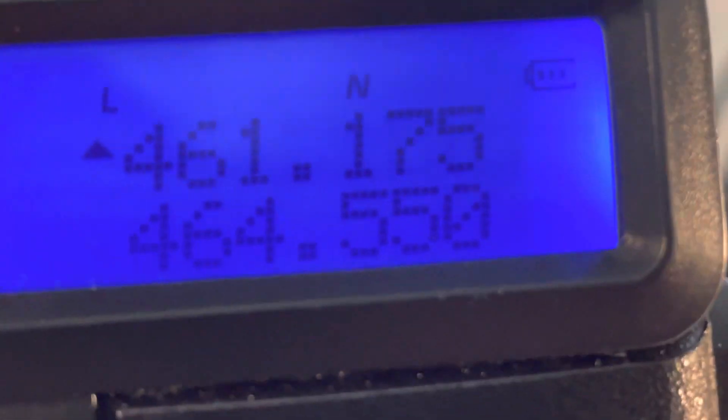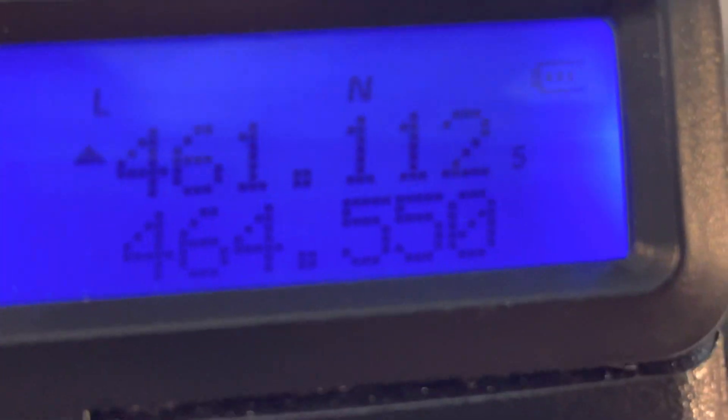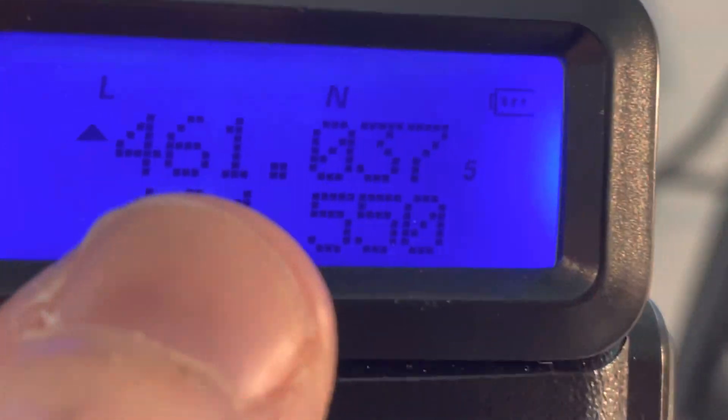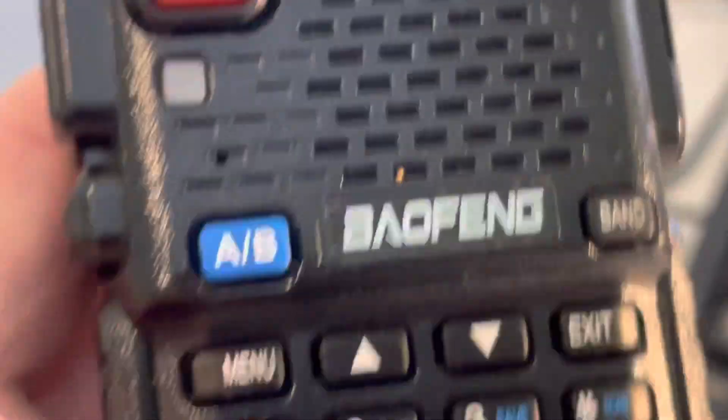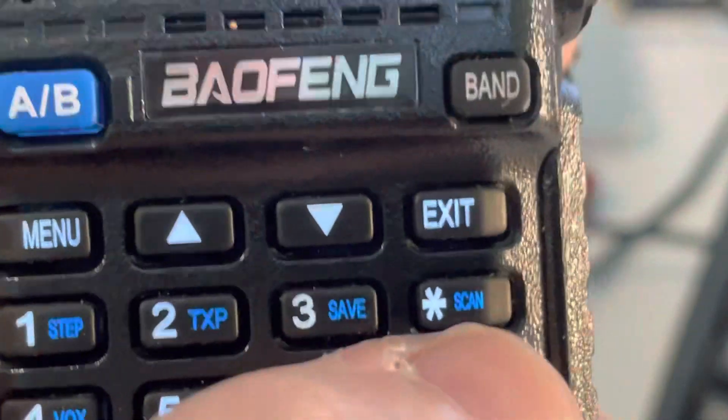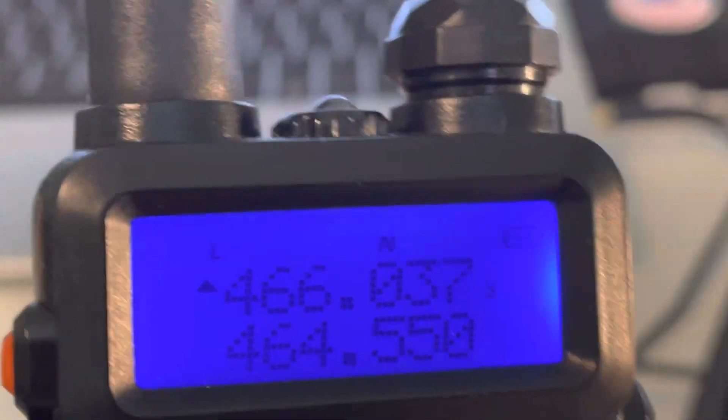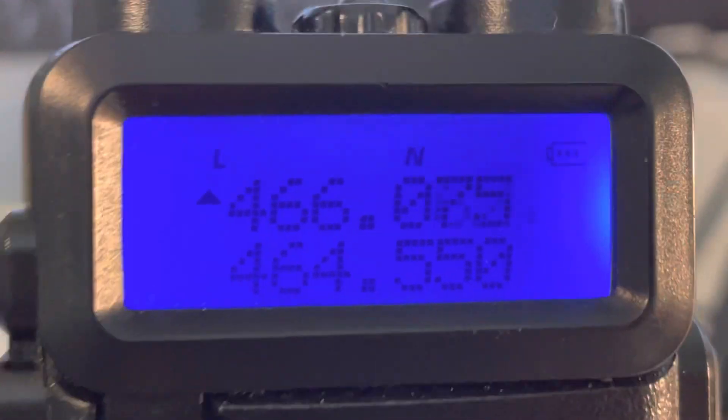And it's also worthy to note that you cannot set up a repeater on these other frequencies, even though 461.0375 has a counterpart that's also a low power itinerant frequency.